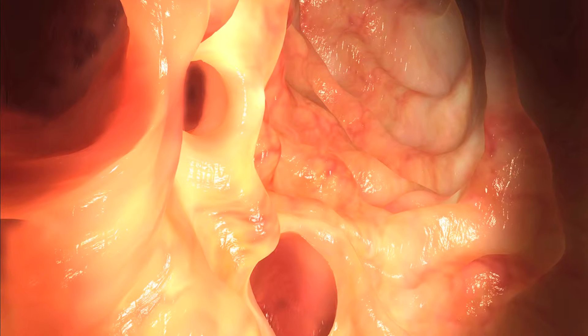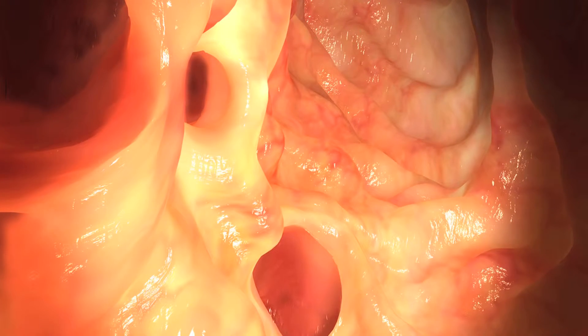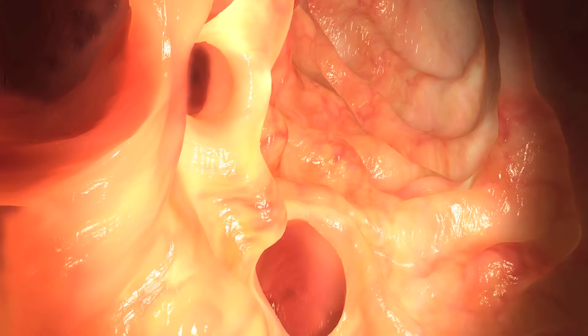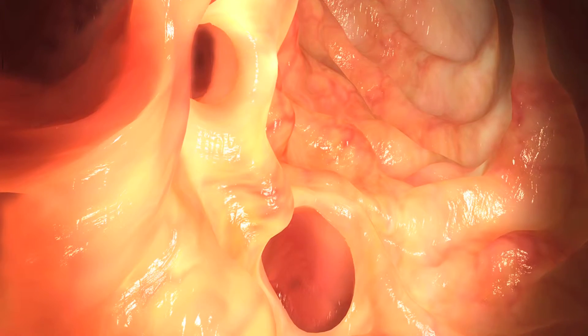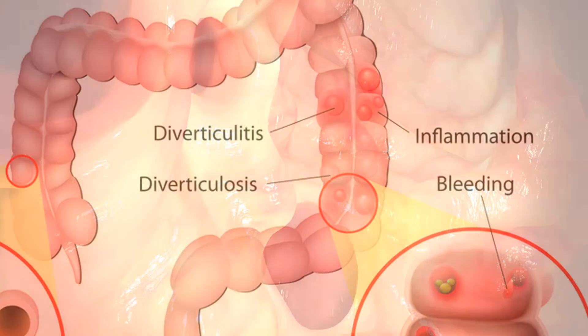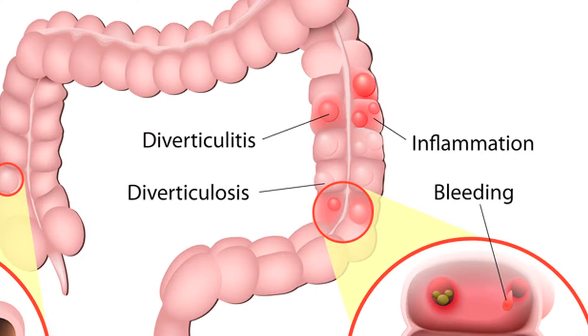Diverticulosis is when your colon has little pockets. Not everybody does, but the vast majority of people over the age of 65 and 70 are going to have some diverticulosis. If it gets inflamed, then it's diverticulitis. A simple way to remember that is any time you hear 'itis' on the end of any word, it means either inflammation or infection.